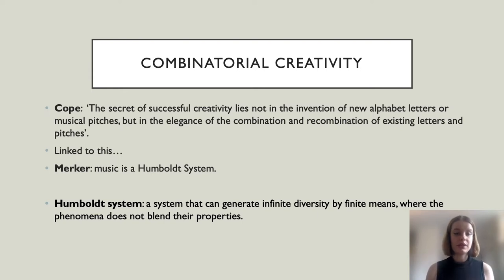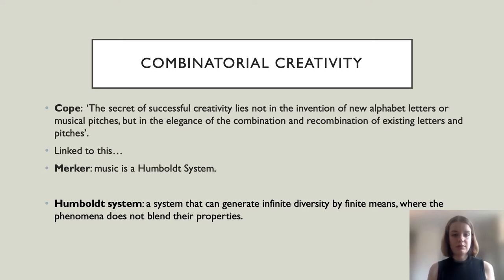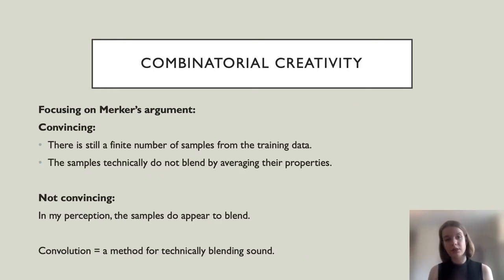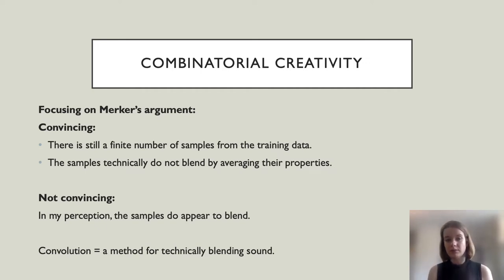Focusing first on combinatorial creativity, Cope states that the secret of successful creativity lies not in the invention of new alphabet letters or musical pictures, but in the elegance of the combination and recombination of the existing letters and pictures. Linked to this is Mercer's notion that music is a Humboldt system — a system that can generate infinite diversity by finite means, where the phenomena do not blend their properties. Raw audio neural networks are working with a much more varied sound palette than just a matter of pitches. With raw audio neural nets, there's still a finite number of samples from the training data which are combined together to create infinite possibility, suggesting a Humboldt system, and the samples technically do not blend by averaging their properties.